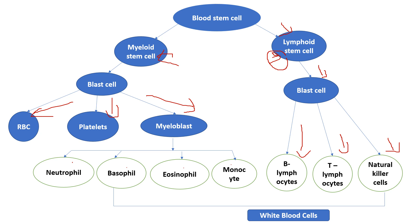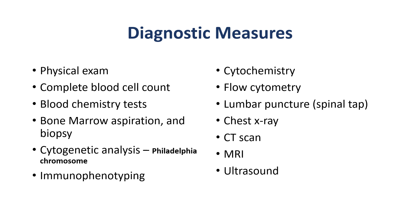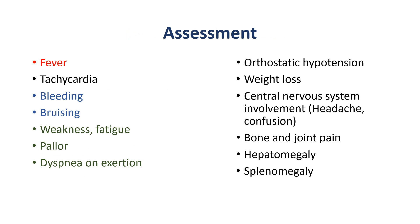There are four major types of leukemia: acute lymphocytic leukemia (ALL), which is common in young children; acute myelogenous leukemia (AML), more common in older adults; chronic lymphocytic leukemia (CLL); and chronic myelogenous leukemia (CML).